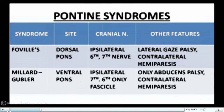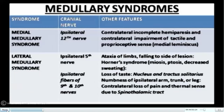Moving to pontine syndromes: Foville syndrome involves the dorsal pons, presenting with ipsilateral sixth and seventh nerve palsies, manifesting as lateral gaze palsy and contralateral hemiparesis. The Millard-Gubler variant involves the ventral pons — the seventh nerve is involved but only the sixth nerve fascicle is affected, not the nucleus, so it does not present as a complete gaze palsy but rather as abducens palsy with contralateral hemiparesis.